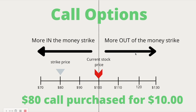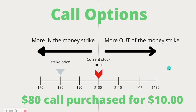This is a more out of the money strike. So this $80 call — if we wanted to purchase a more in the money strike price, we would purchase the $70 call. If we wanted to purchase something more out of the money but still in the money, it's the $90 strike price. If we wanted to purchase something completely out of the money, it would be the $110 strike. And very far out of the money would be the $130 strike. There's one more term: at the money, which means right at where the stock is currently trading. So the money is a reference to where the stock is trading. In the money is below the stock price when we're talking about call options; out of the money is above that stock price.